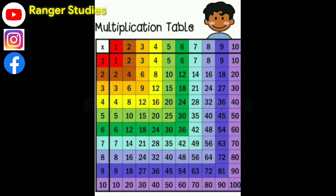2 1s are 2, 2 2s are 4, 2 3s are 6, 2 4s are 8, 2 5s are 10, 2 6s are 12, 2 7s are 14, 2 8s are 16, 2 9s are 18, 2 10s are 20.